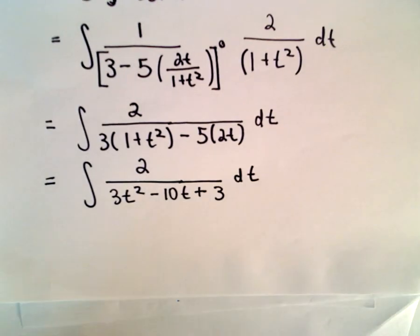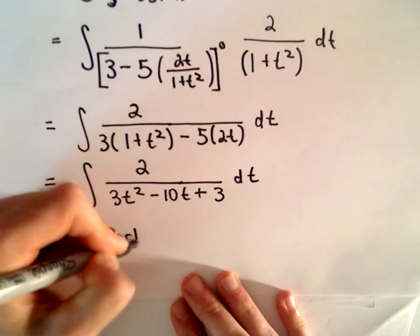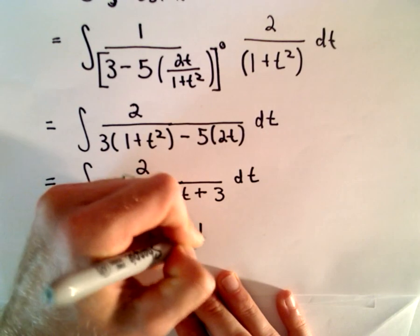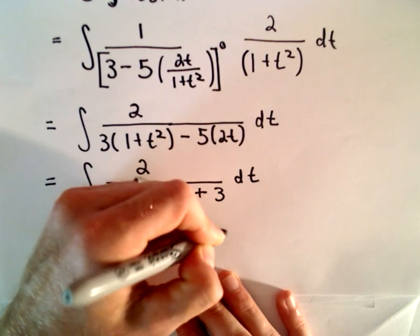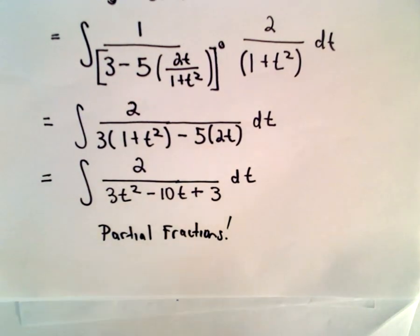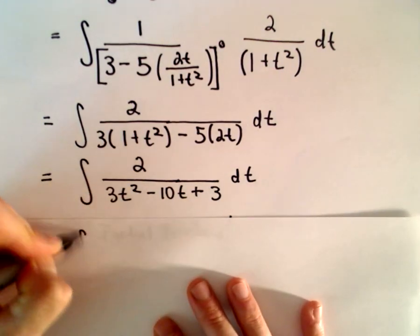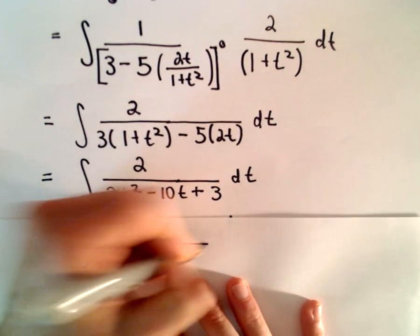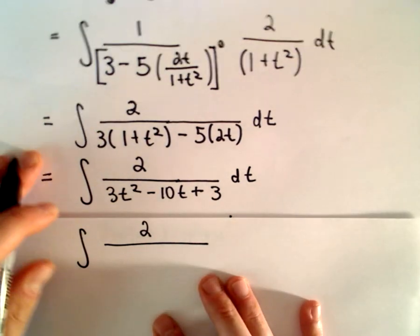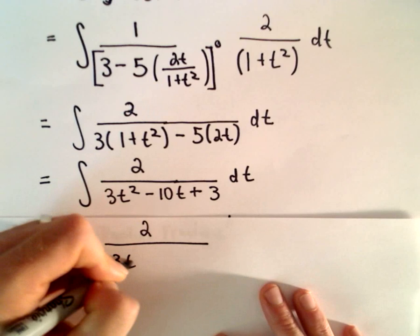And already this is starting to look much more like a familiar rational function. We've got 2 over — writing in descending order — 3t squared, negative 10t, and positive 3, dt. Now what I'm going to try to do is just partial fractions from here on out. The first thing to consider is: does the denominator factor?